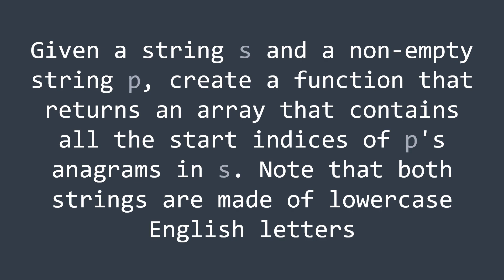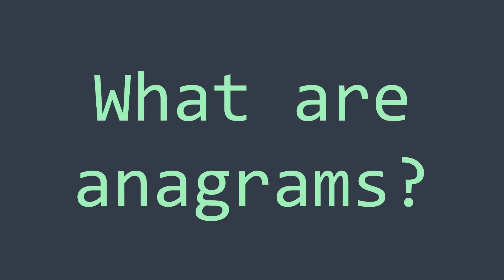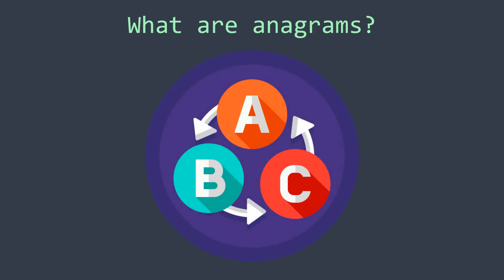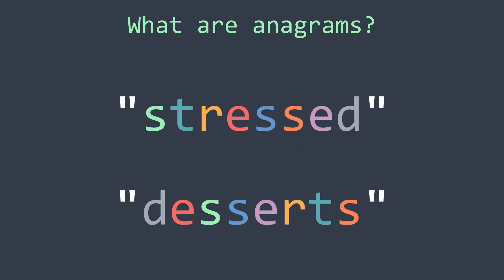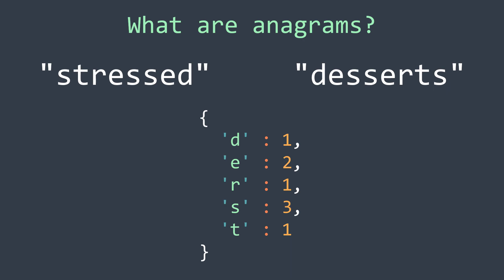First of all, what are anagrams? Two strings are considered anagrams if they are rearrangements of the same characters. For example, 'stressed' and 'desserts' are anagrams. To check if two strings are anagrams, we just have to check that they have the same number of occurrences of each letter. In our example, both 'stressed' and 'desserts' have 1 d, 2 e's, 1 r, 3 s's and 1 t.